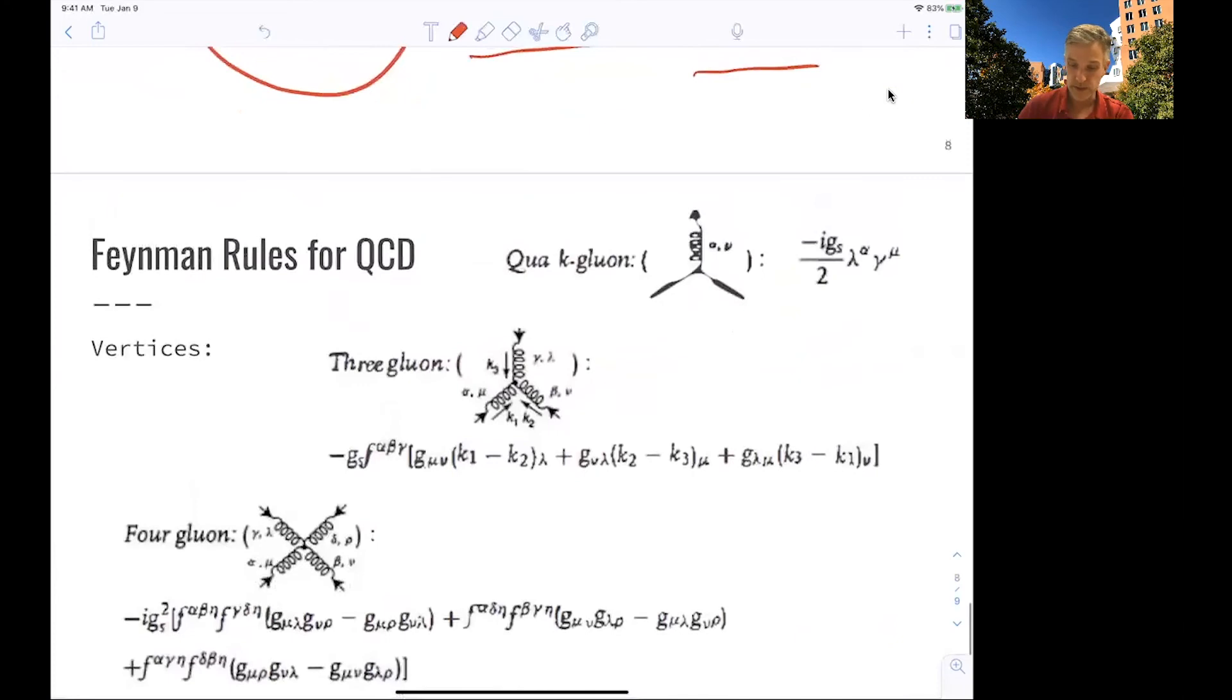So the vertices come with a vertex factor in our Feynman rules. Again, for this very first one, we find a very similar one as we had before. You see here this Gell-Mann matrix, and that just causes the rotation in color.